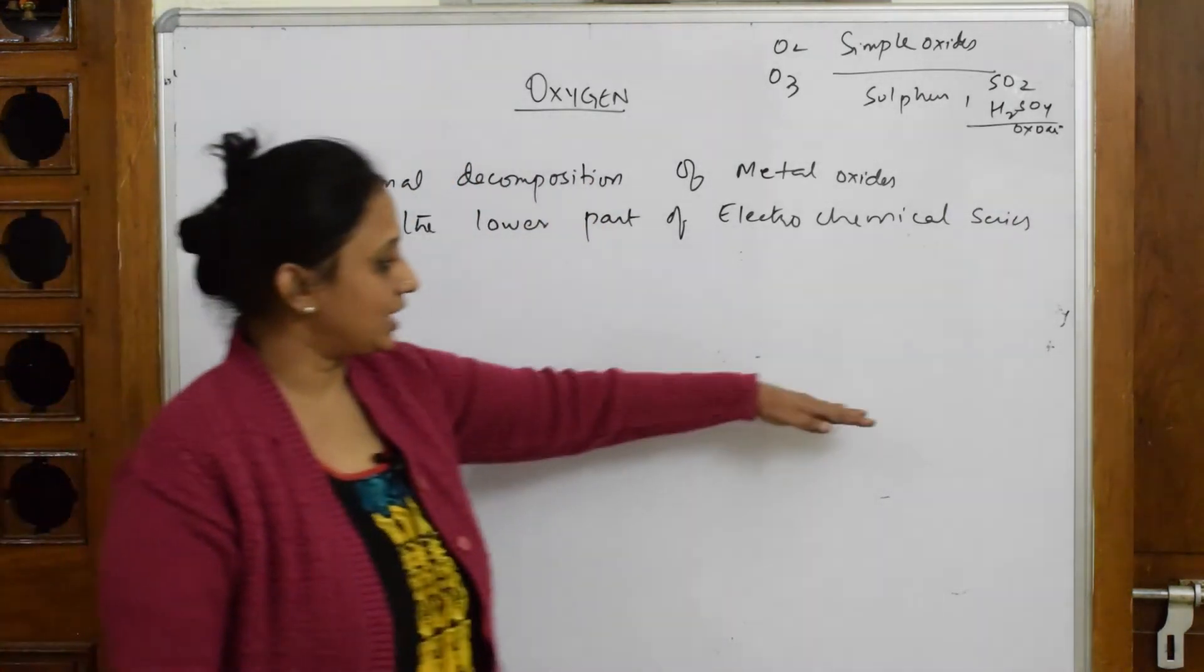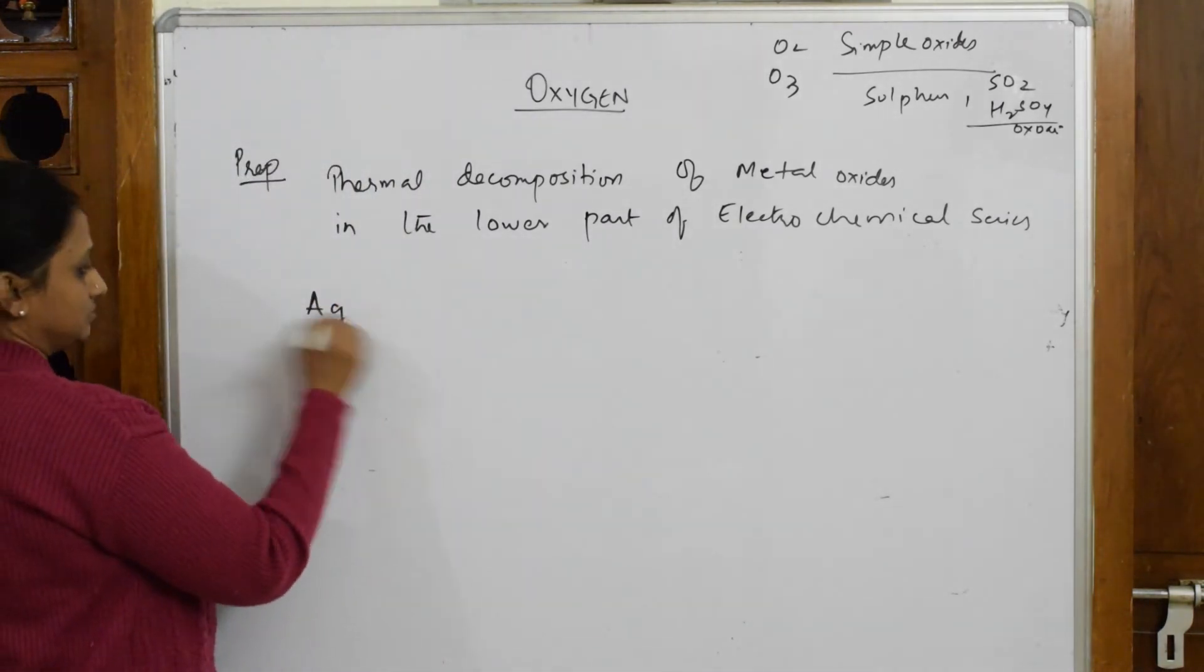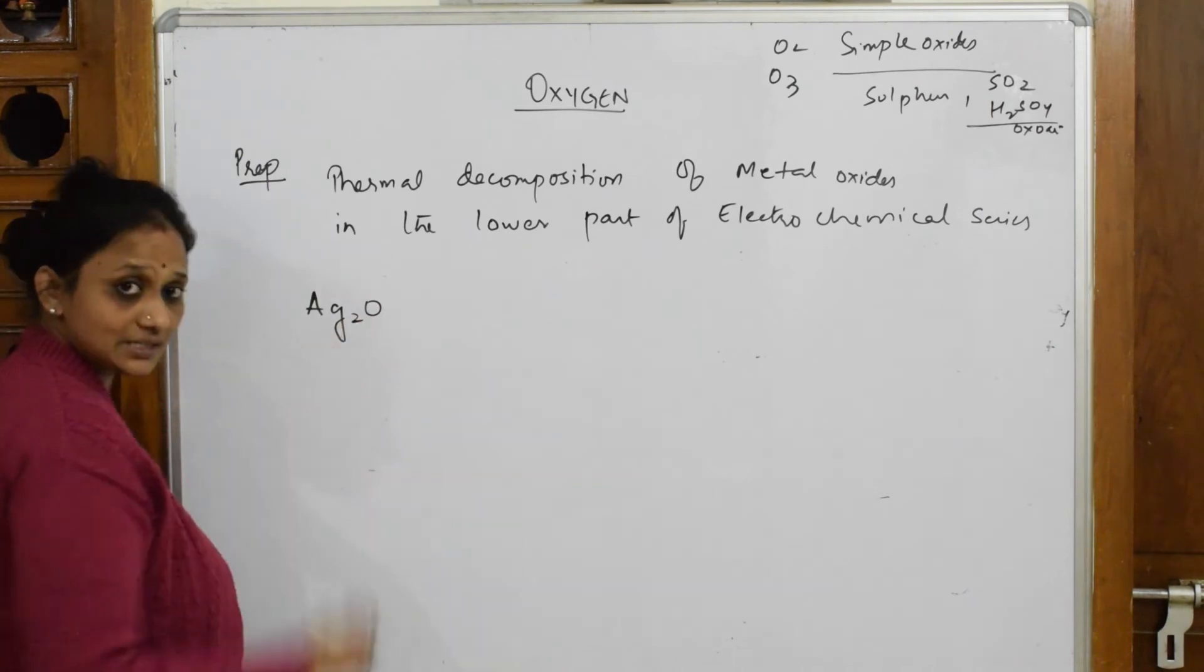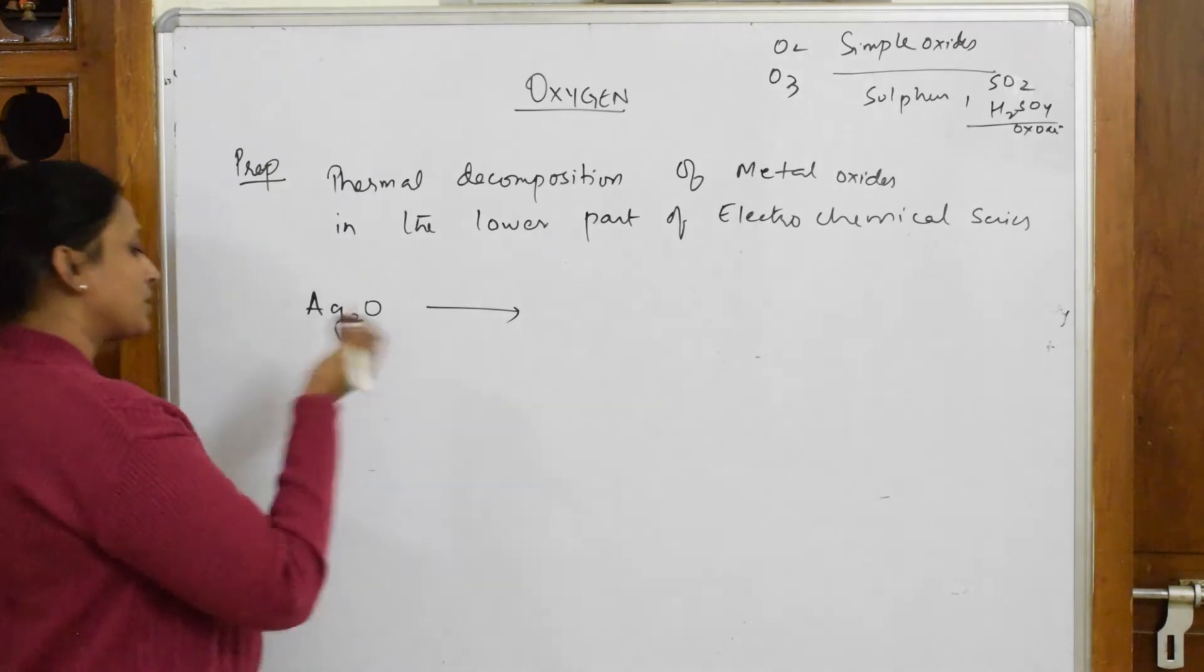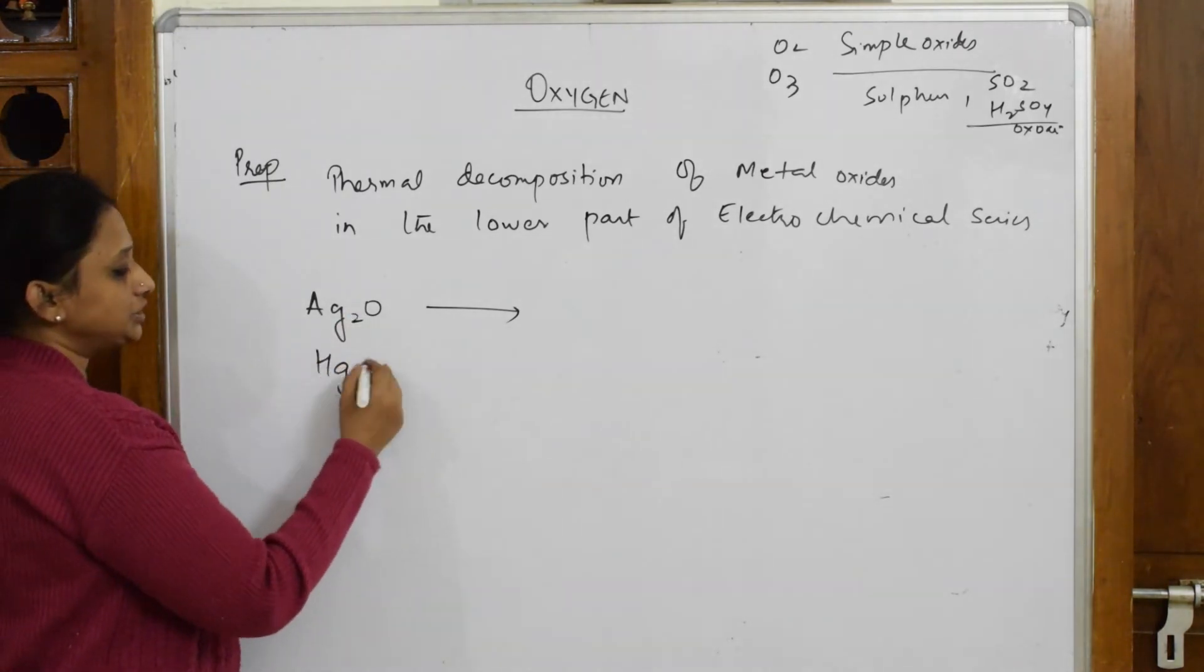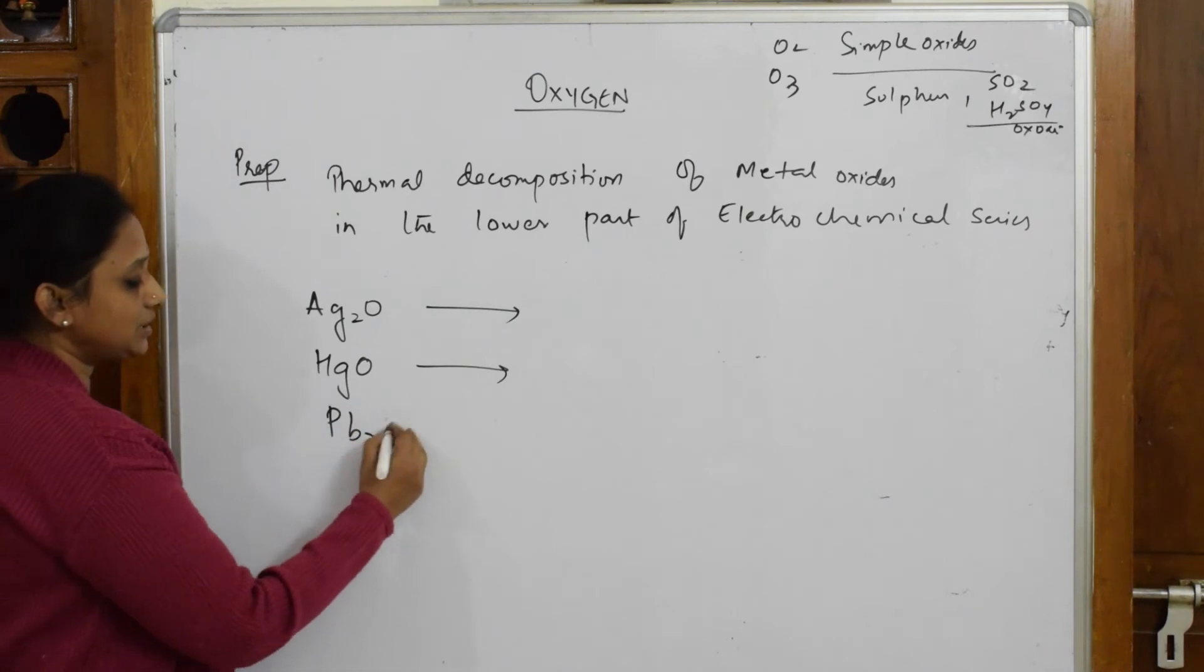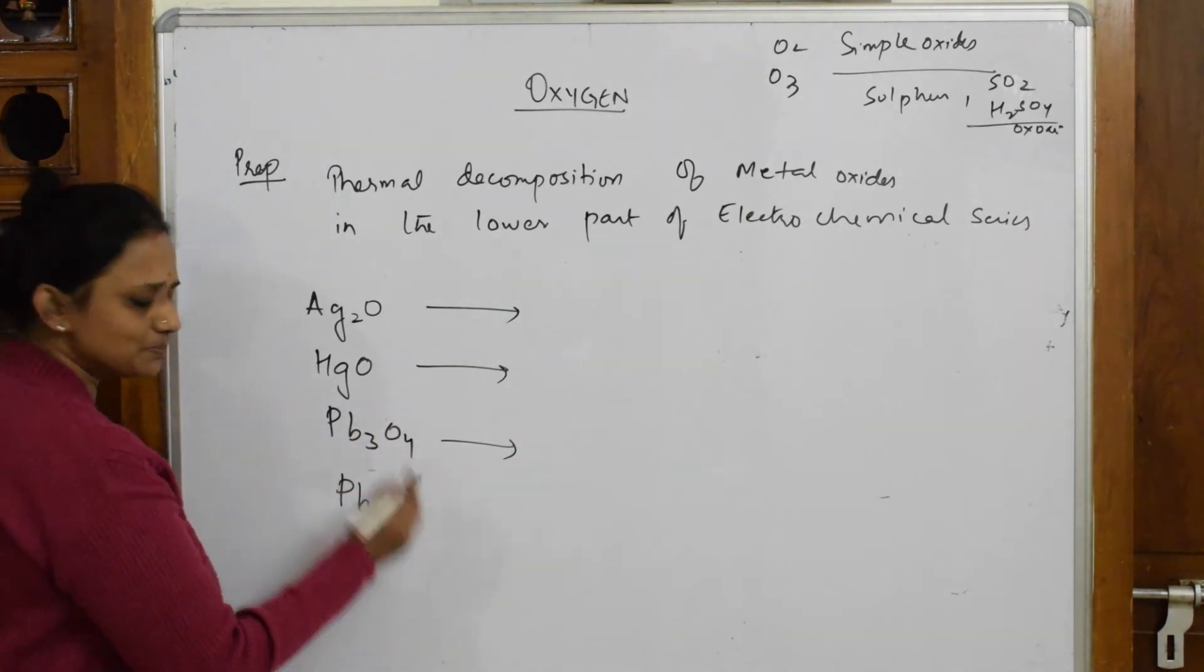In the lower part of the electrochemical series, we have hydrogen, and above and below that also. Suppose if I take Ag2O - silver valence is +1. Let me take one more: HgO. Let me take pb3O4 and one more pbO2 - simple examples which are lower in the electrochemical series.